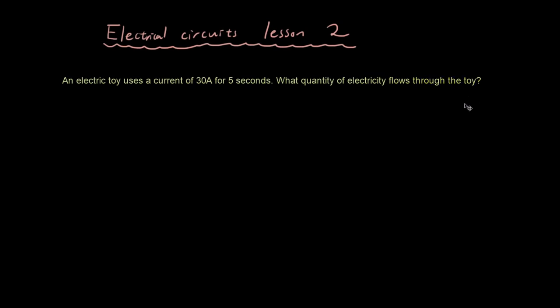So have a go at this and come back when you're done. If you guys remember from last lesson, we introduced you to the equation I equals Q over t, where I is equal to the current in amps, Q is equal to the charge, quantity of charge in coulombs, and t is equal to time in seconds.